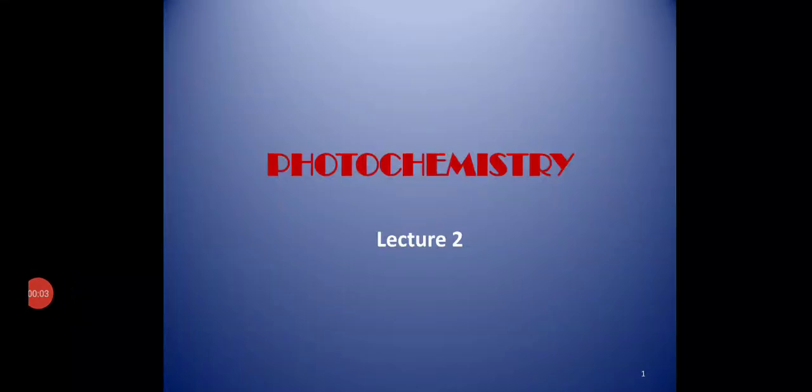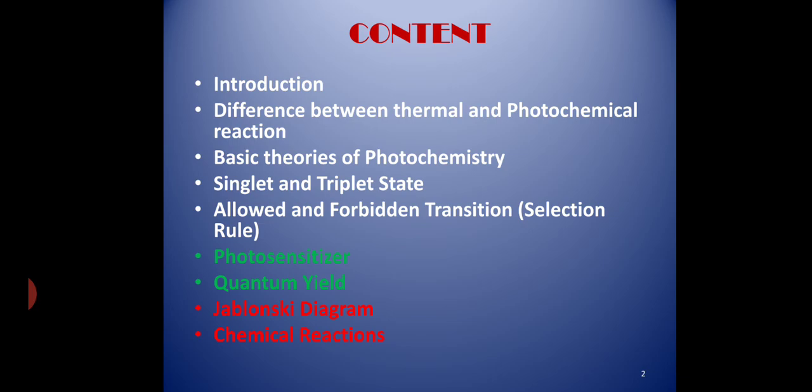Hello everyone and welcome to photochemistry lecture 2. We have already finished with photochemistry lecture 1. Those who wish to watch the video can see the link provided in the description box. In the last lecture we discussed some of the basic concepts of photochemistry. Today we are going to learn about photosensitizer and quantum yield. In the next lecture we will turn our attention to the Jablonski diagram and some common organic photochemical reactions.